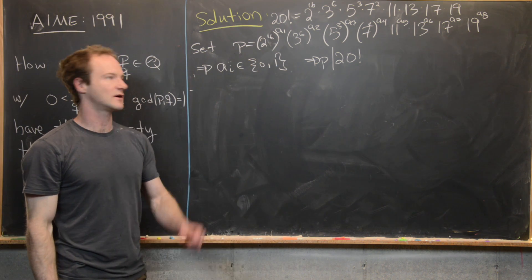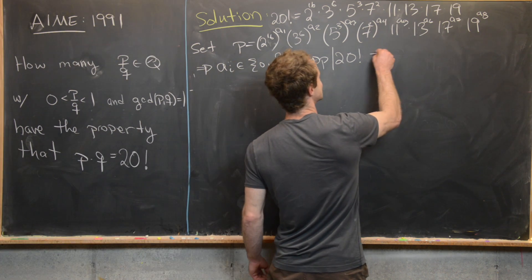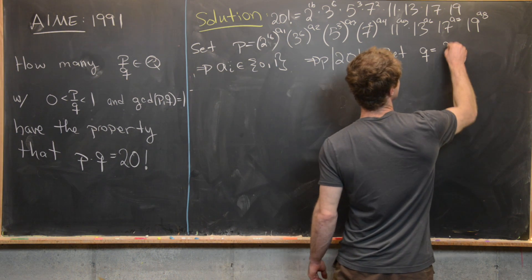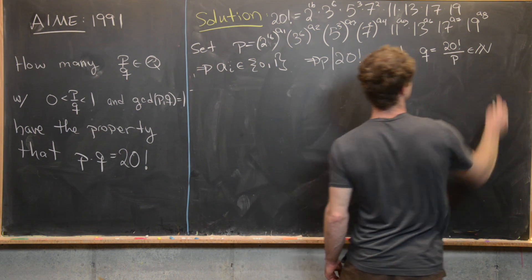But if P divides 20 factorial, that means 20 factorial divided by P is a natural number. And that's exactly what we're going to set Q equal to. So we'll set Q equal to 20 factorial over P. And by that discussion we just had, that's a natural number.